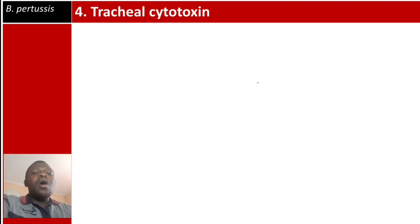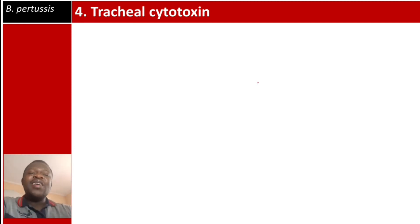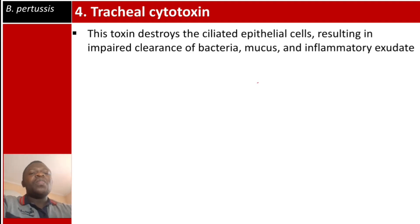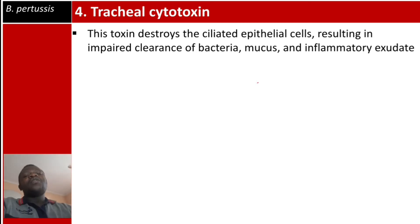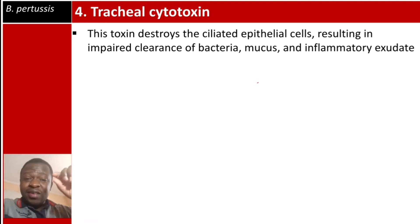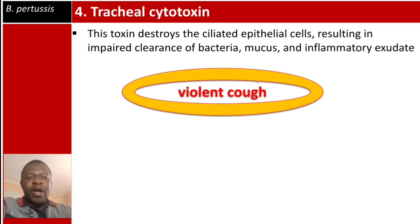The fourth and final virulence factor is tracheal cytotoxin. This toxin destroys the ciliated epithelial cells, resulting in impaired clearance of bacteria, mucus, and inflammatory exudate. Tracheal cytotoxin is also believed to be associated with the violent cough characteristic of whooping cough.